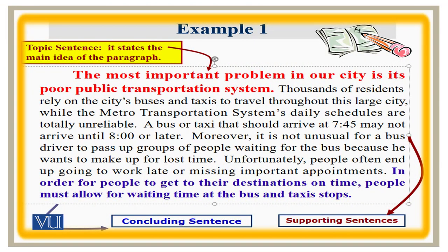As you can see, the first sentence gives the main idea, which is about the poor public transportation system in the city. All the sentences that come after it are actually in support of this idea and give factual information about how the public transportation is in poor condition. The last sentence is the concluding sentence where the writer has summarized their point of view by restating the thesis statement.